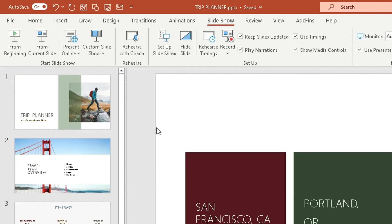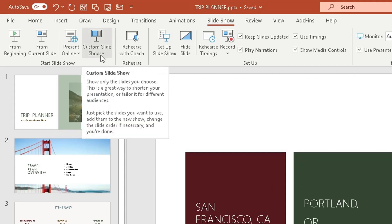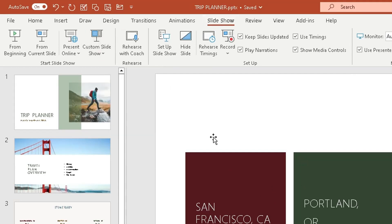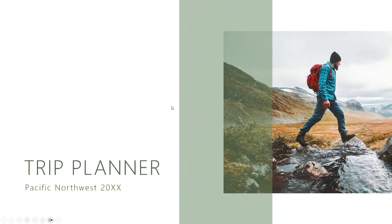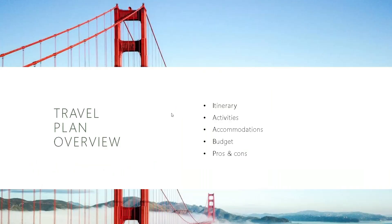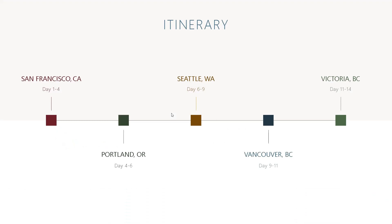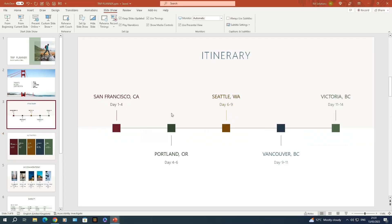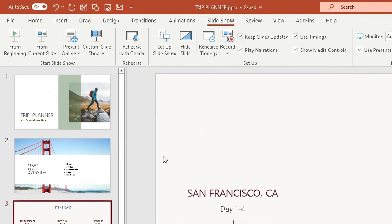Let's say I've got my first meeting with Audience One. With the presentation open, go to Slideshow, click Custom Slideshow, and select Audience One. This takes the presentation into slideshow mode. Navigate through the slides by pressing Enter — it shows slide one, then slide two, then slide three, and then the presentation finishes automatically without showing the other slides. It returns to the slide design view.